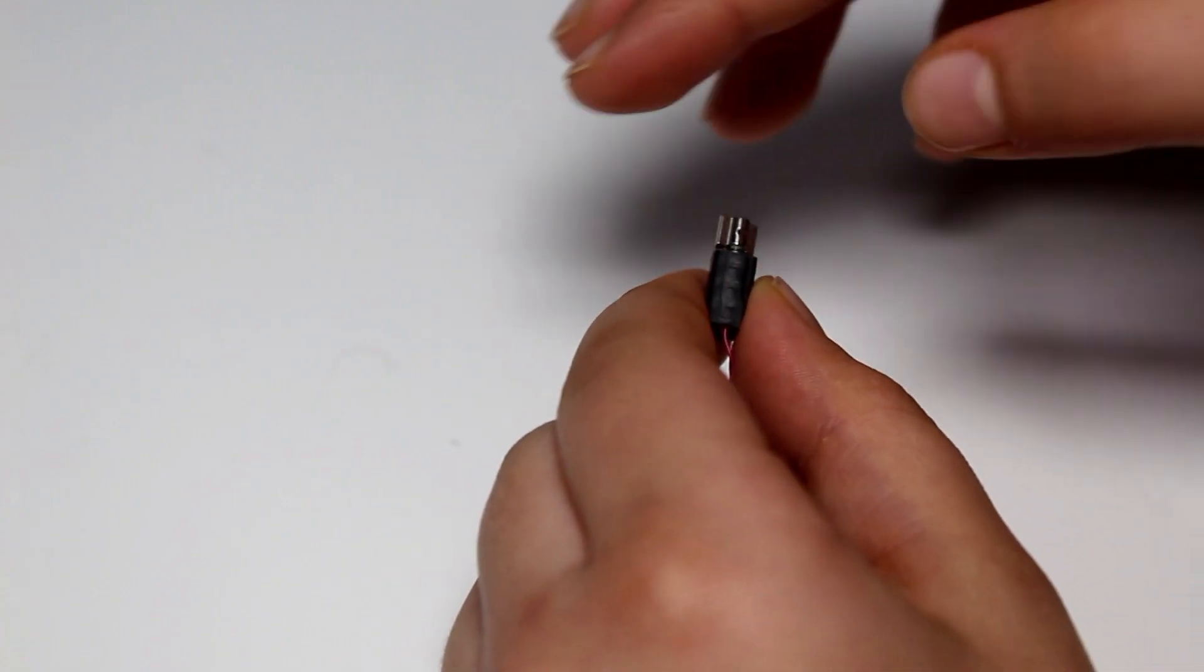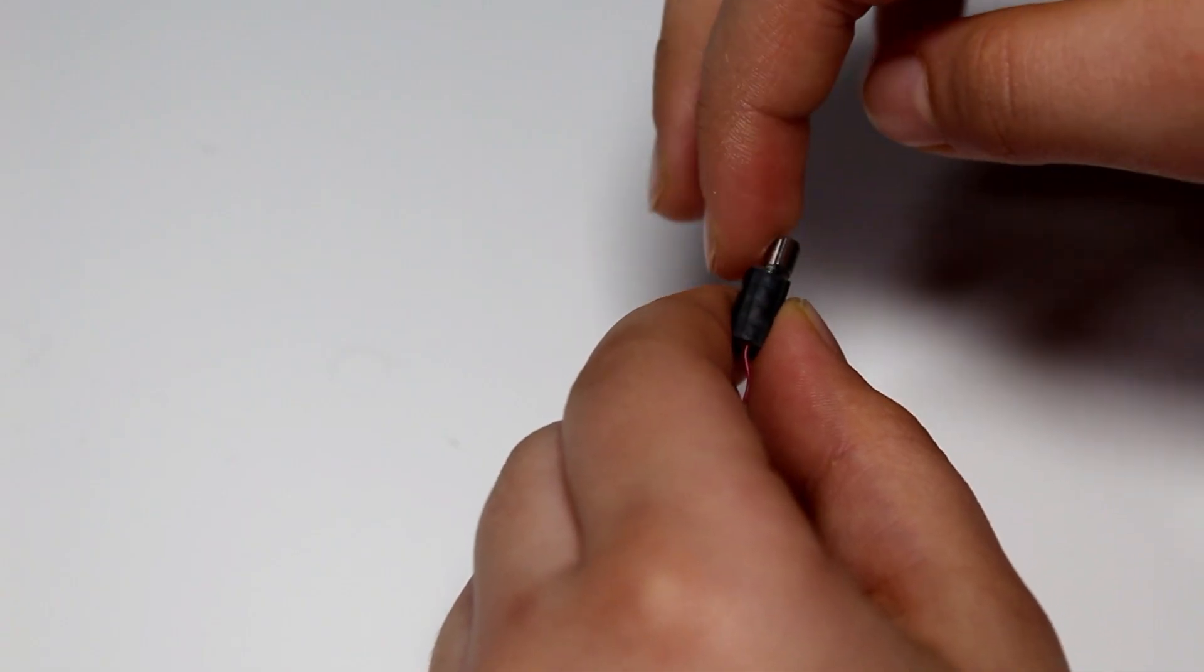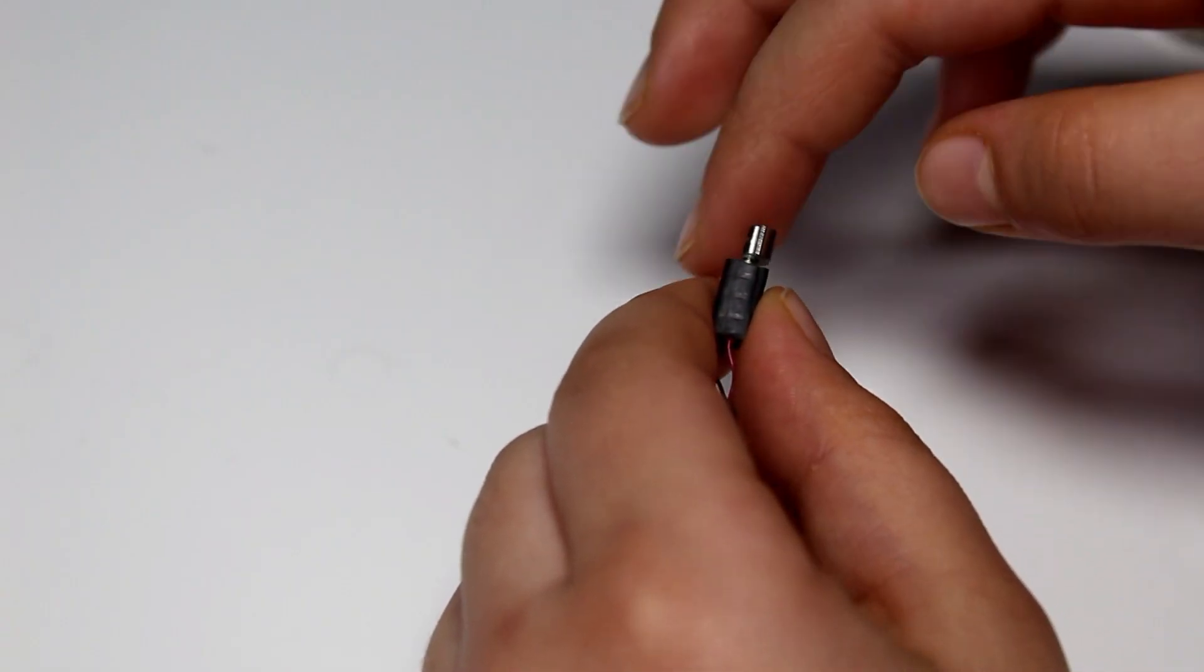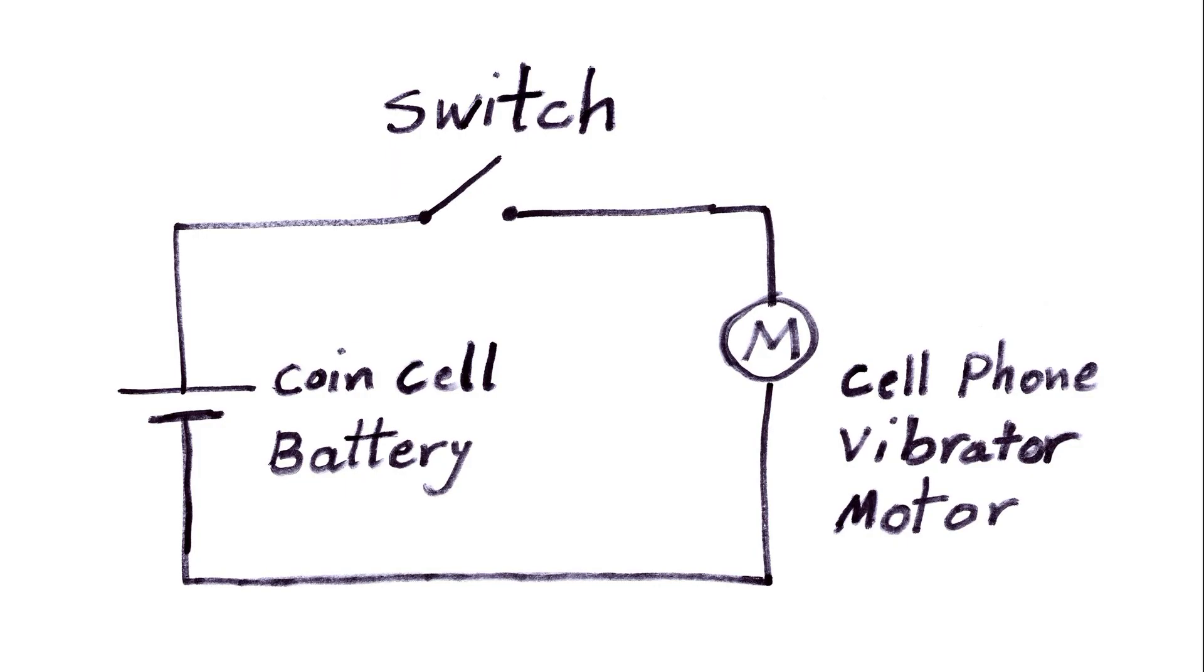A cell phone vibrator is a DC motor with imbalanced load. When it turns, it shakes and vibrates. You need to connect things together like this.